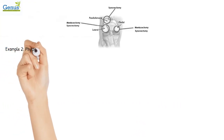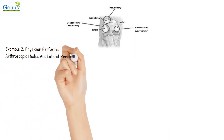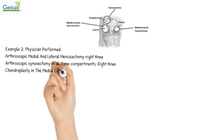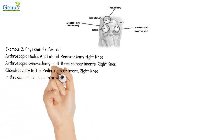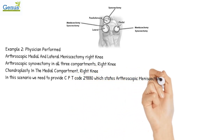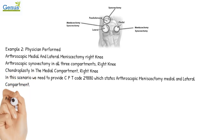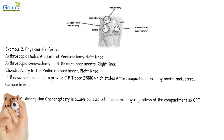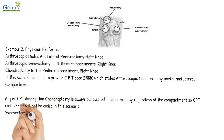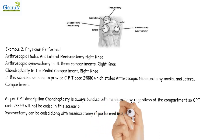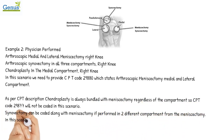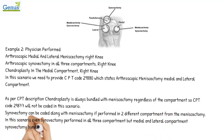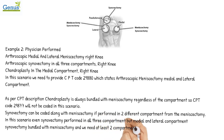Example 2: A physician performed arthroscopic medial and lateral meniscectomy of the right knee, arthroscopic synovectomy in all three compartments of the right knee, and chondroplasty in the medial compartment of the right knee. We code CPT code 29880 for arthroscopic meniscectomy of the medial and lateral compartment. As per CPT code 29880, chondroplasty is always bundled with meniscectomy regardless of compartment, so CPT code 29877 will not be coded. Synovectomy can be coded along with meniscectomy if performed in two different compartments from the meniscectomy. However, since medial and lateral compartment synovectomy is bundled with meniscectomy and we need at least two compartments of synovectomy to code separately, CPT code 29876 is not coded.